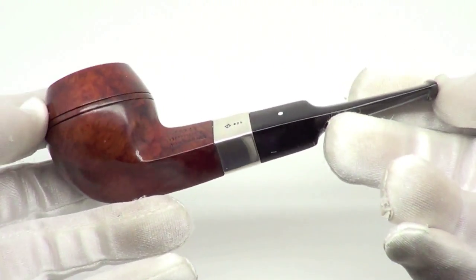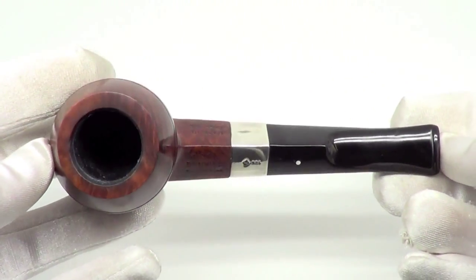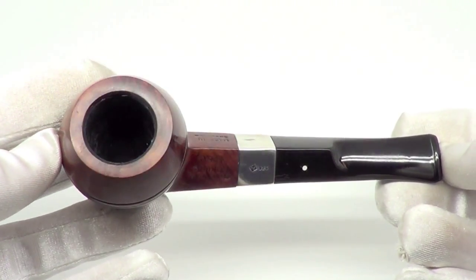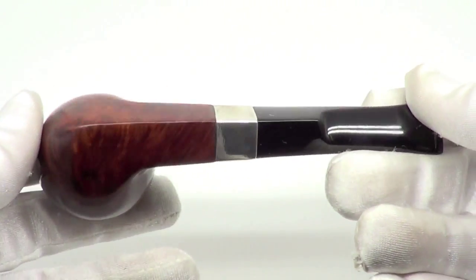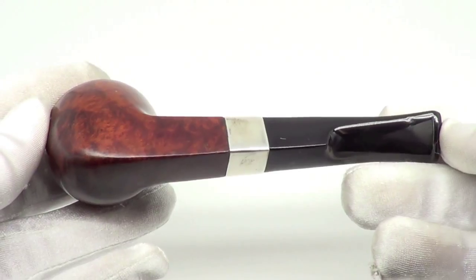As you can see, this is a straight Bulldog pipe shape. It is fully restored, sanitized, cleaned out and ready to smoke. It's in great condition.